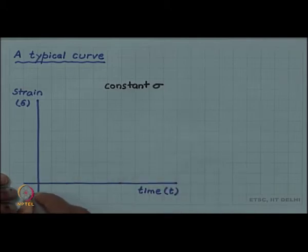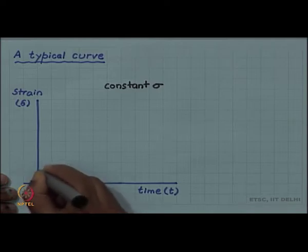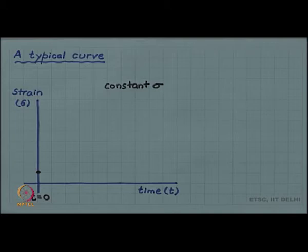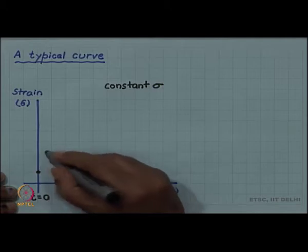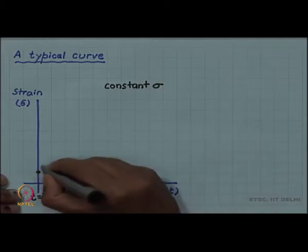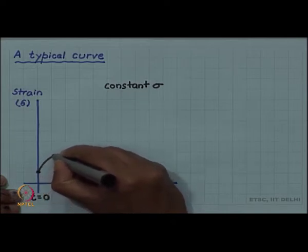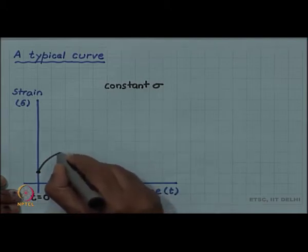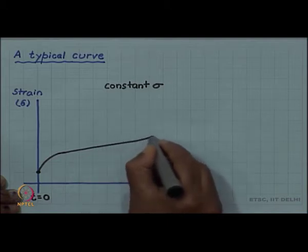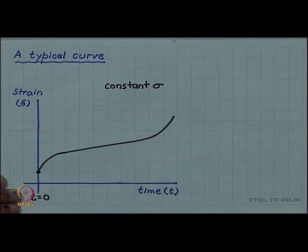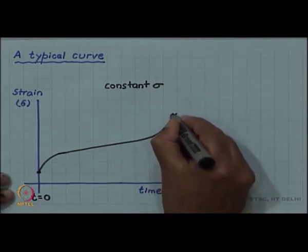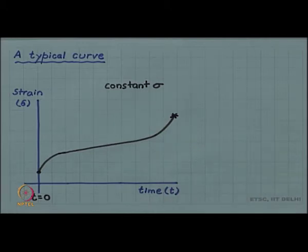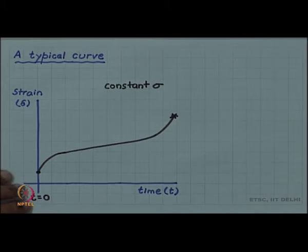At time t equals 0, there will be some initial deformation as soon as the load is put on the material. So, after that even though load is not being increased as a function of time, material starts to deform and so the strain builds up. And finally, at large enough strain the material will break. So, you can see here that this is a typical creep curve of strain as a function of time with constant stress.